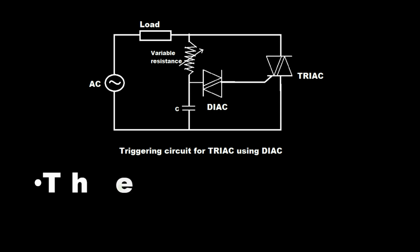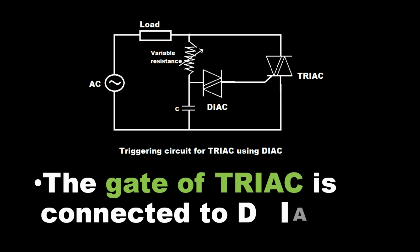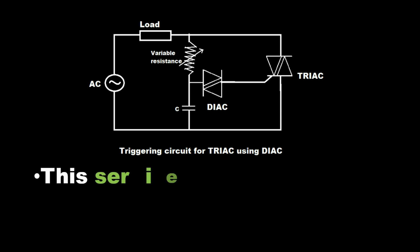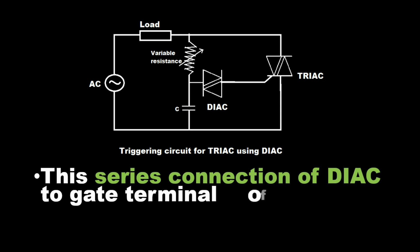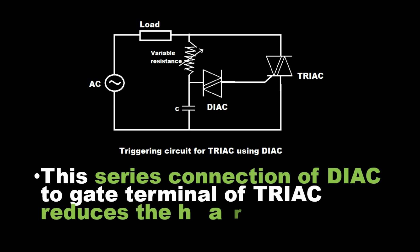The gate of TRIAC is connected to DIAC. This series connection of DIAC to gate terminal of TRIAC reduces the harmonics.